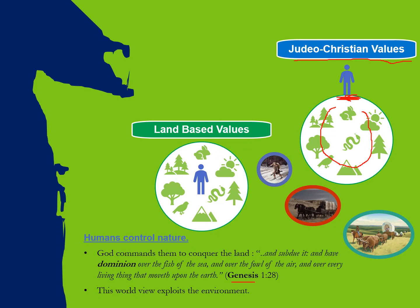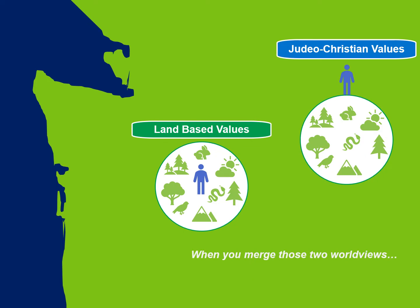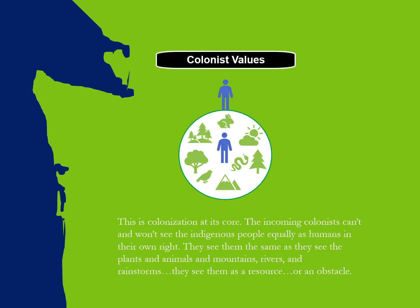Two very different ways of seeing the world. What we're looking at with these early contacts is that now that these two very different value systems are coming into contact with each other, there's going to be some merging of these worldviews. When you merge those two worldviews, you end up with something that preserves each — humans on top, humans at one with nature — but this human is on top of this human. This is what I'm calling colonist values, and this is colonization at its core.